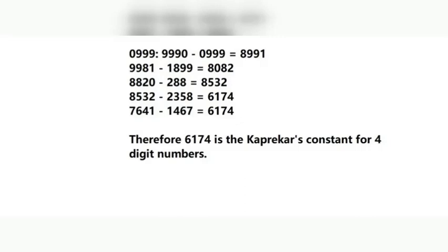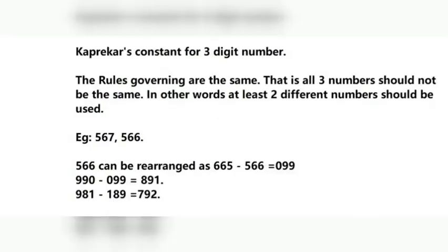Once we arrive at the conclusion that 6174 is the Kaprekar's Constant for 4-digit numbers, a curiosity arises: is there a Kaprekar's Constant for 3-digit or other digit numbers? In 3-digit numbers, there is another Kaprekar's Constant available. In 5-digit numbers, there is none. The rules are the same: no digit should repeat all three times — no 555 or 444 — but numbers like 567 or 566 with at least two different digits are valid.